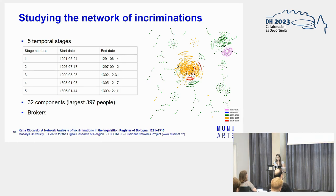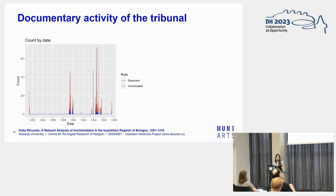We could also notice another component shown on top right. We also have brokers — the black dots are people who weigh more in the network, those who connected the stages. Keeping in mind these two larger components, turning to this graph, we find them as the peak of activity of the tribunal — between 1299 and 1300, and 1304 to 1306.